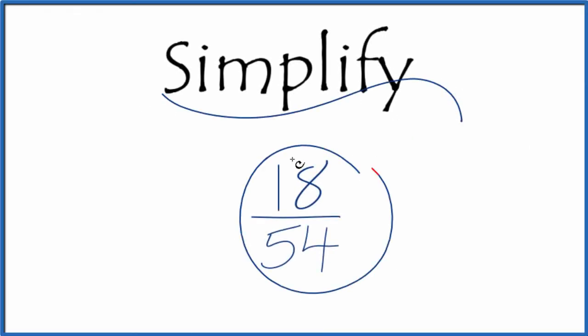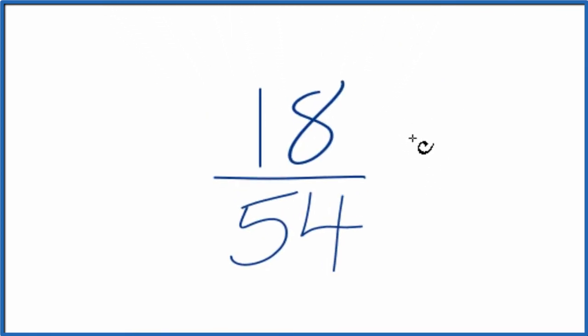Let's simplify the fraction 18/54, and here's how we'll do it. We want to find another fraction that's equivalent to 18 over 54. It has the same value, it's just that it's in simplest terms.